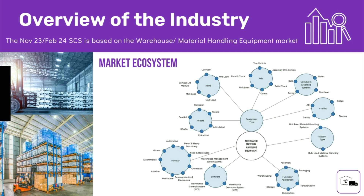We have AGVs, conveyor and sorting systems, and cranes. The market is also segmented by system type, by function or application — including warehousing as a sub-segment of material handling — and by software used in a warehouse. This comprehensive chart shows how the warehouse equipment market is divided by equipment type, software, industries that use it, and function.